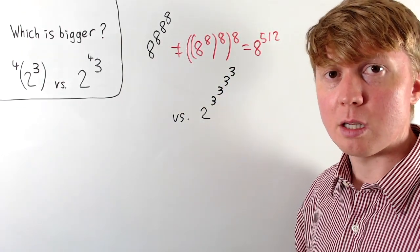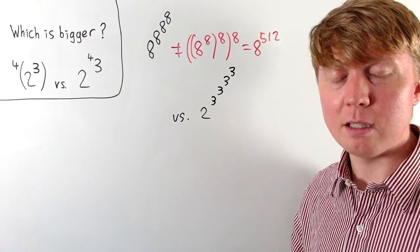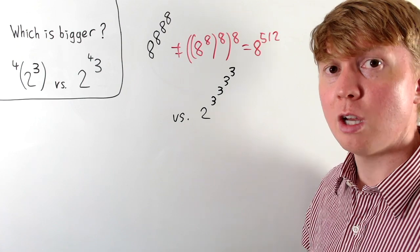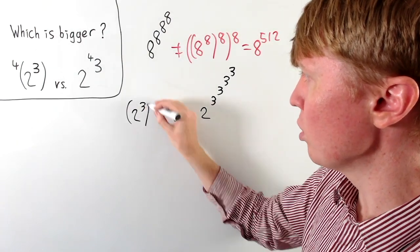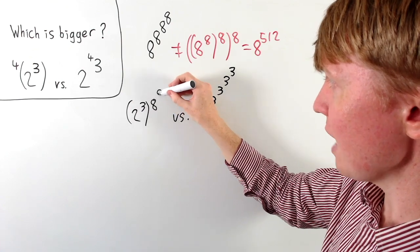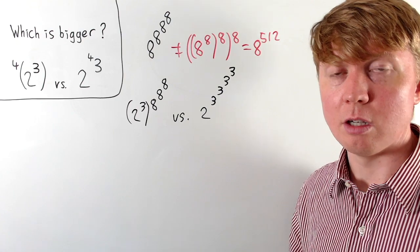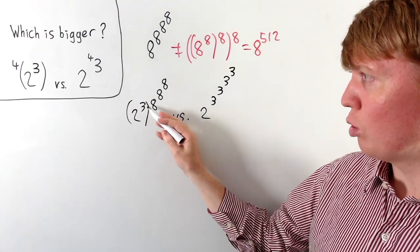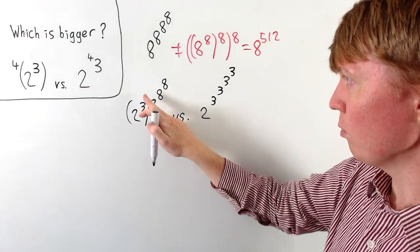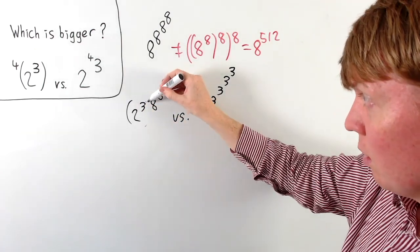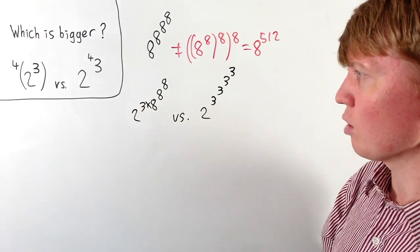To make the comparison nicer, we can see there's a power of 2 involved. We can express 8 as a power of 2, because 8 is just 2 cubed. So we rewrite this as 2 cubed, all raised to the power of this eight to the eight to the eight. Using our laws of indices, a number raised to a power in brackets then raised to another power means we can write this as 2 to the power of 3 times this eight-to-the-eight-to-the-eight expression.